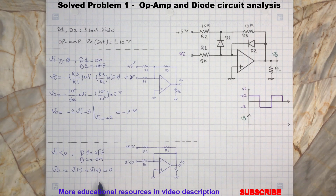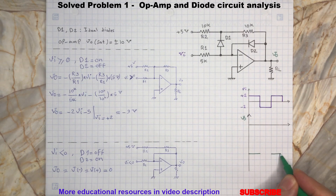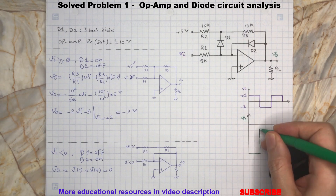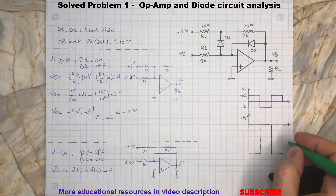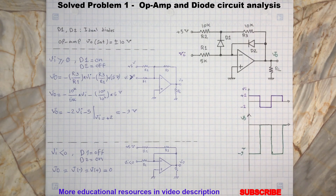Let's draw the circuit output voltage waveform in relation to the input signal. As you can see here, the output voltage of this circuit stays within the op-amp saturation limits, so we can accept the result.